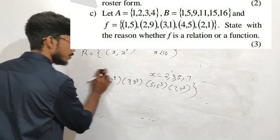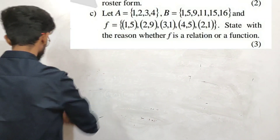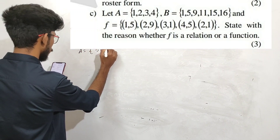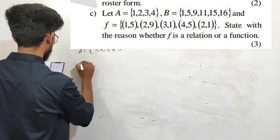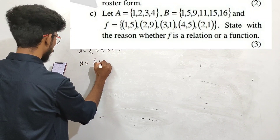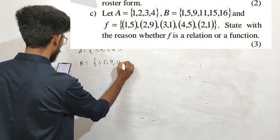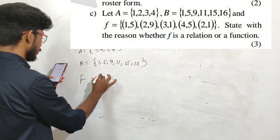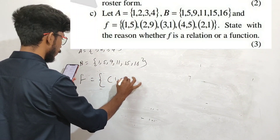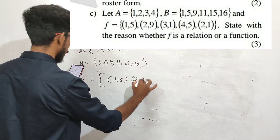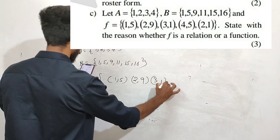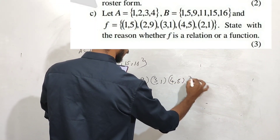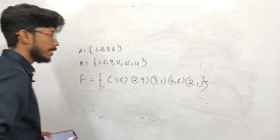Next question, C part. I will ask two important questions. Set A is 1, 2, 3, 4. Set B is 1, 5, 9, 11, 15, 16. F is a function from A to B.